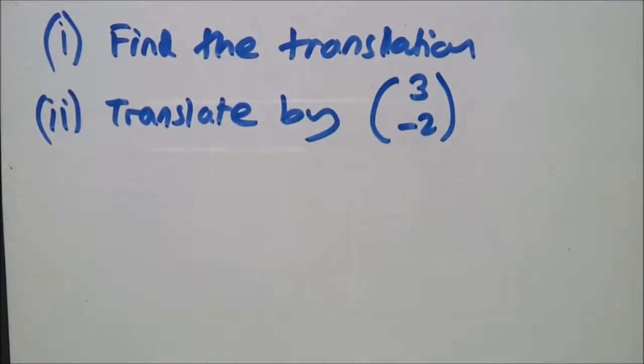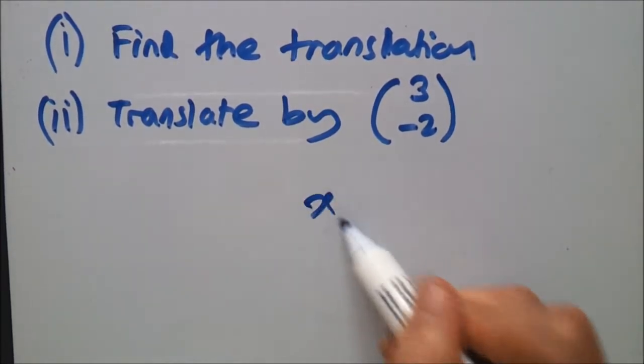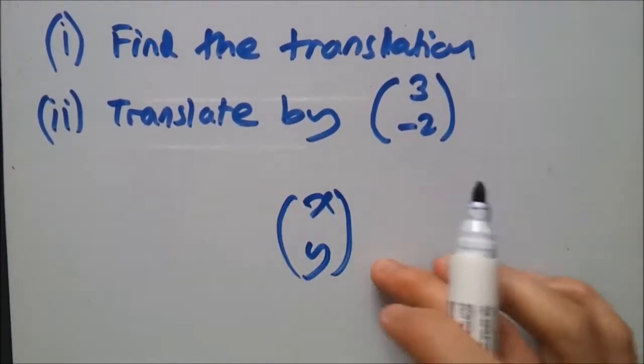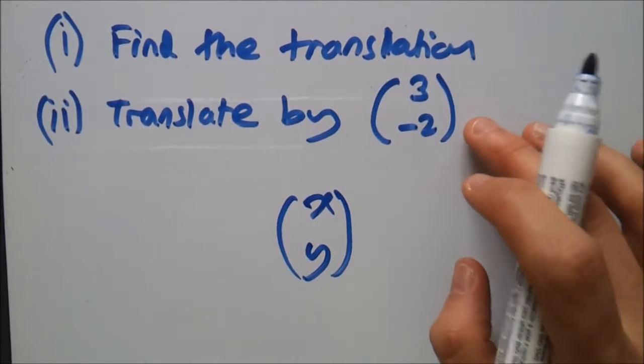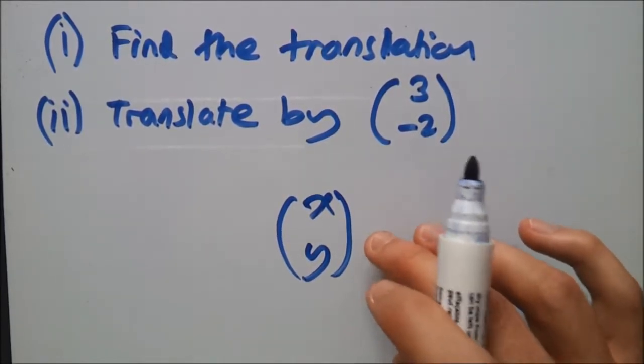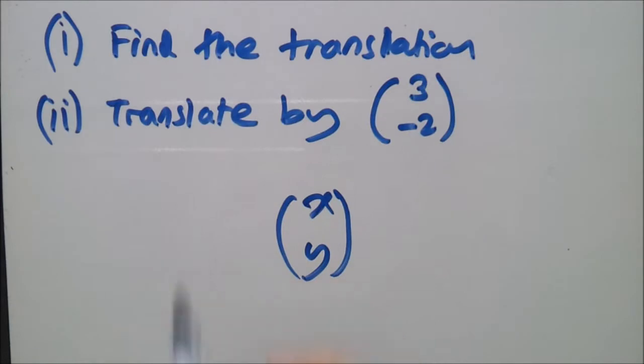In this video we'll be focusing on translation, which means moving one shape to another and finding out what exactly happened in terms of something known as a column vector, which is represented by this. Firstly, I'll explain what this notation means and how we put this form, but first things first, let's do part one: find the translation.